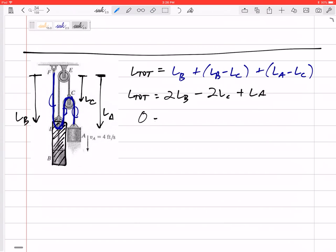I need to take the derivative and set that equal to 0. So 2VB minus 2VC plus VA. So I know VA is positive 4, but I'd still have two unknowns. So let me kind of put an asterisk by here and come back to that.